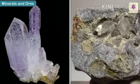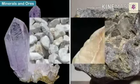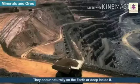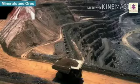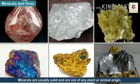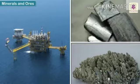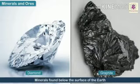Minerals and Ores. Rocks are made of substances called minerals. They occur naturally on the earth or deep inside it. Minerals are usually solid and are not of any plant or animal origin. Some minerals are extracted from the sea salts present in sea water. Minerals like diamond and graphite are found below the surface of the earth.